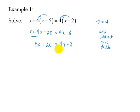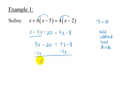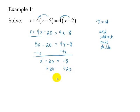To get the x terms on one side, subtract 4x from each side. This gives us x minus 20 is equal to negative 8. Now add 20 to each side to get x equals 12.